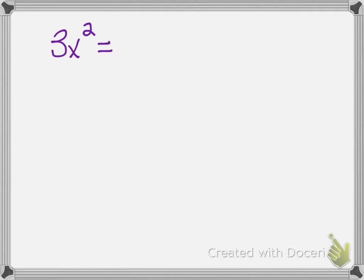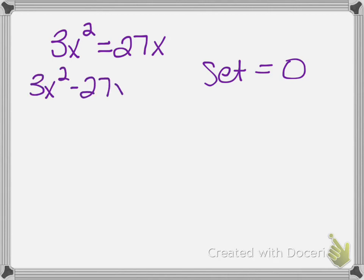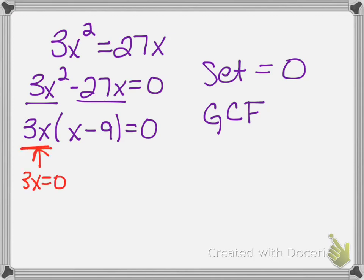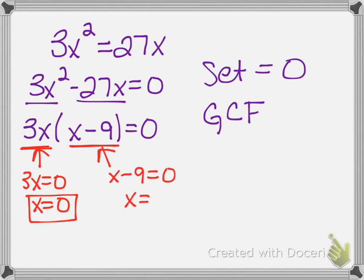The second question on the quiz was also a factoring problem, but it just gave you an equation that looked like this — also from the solving worksheet. We've been told to factor, which means we set equal to zero first, so subtract the 27x to move it over. For this particular problem, all you have to do is pull out the GCF. Both terms have a 3 and an x to pull out, leaving behind x minus 9. By the zero product property, either 3x equals zero giving x equals 0, or x minus 9 equals zero giving x equals 9.